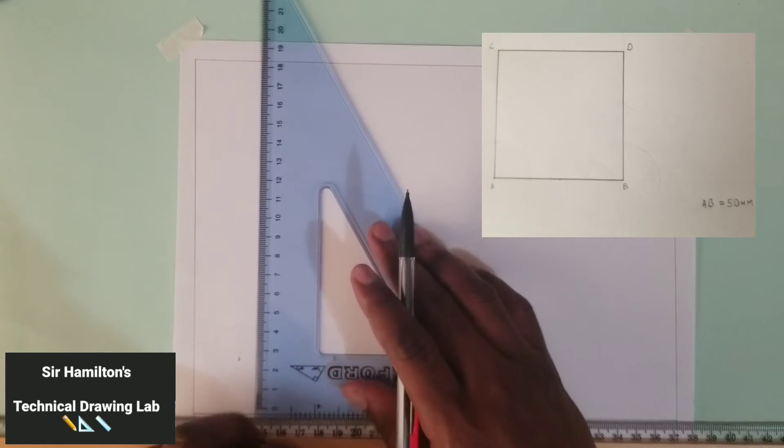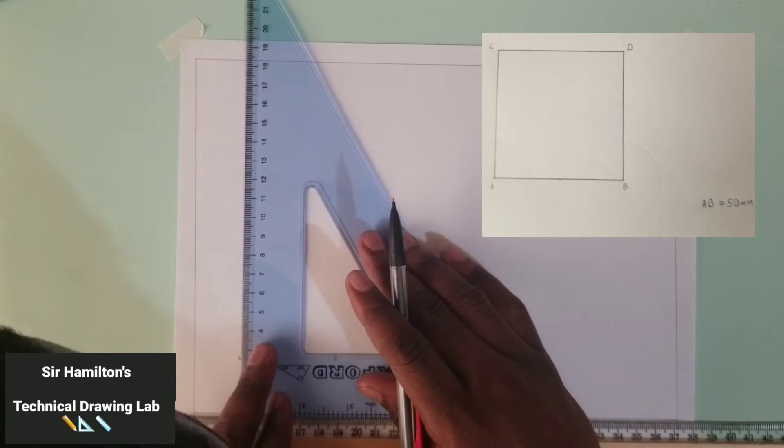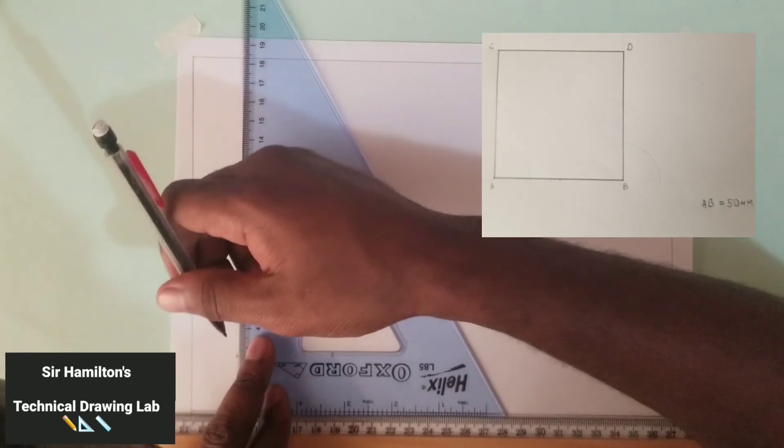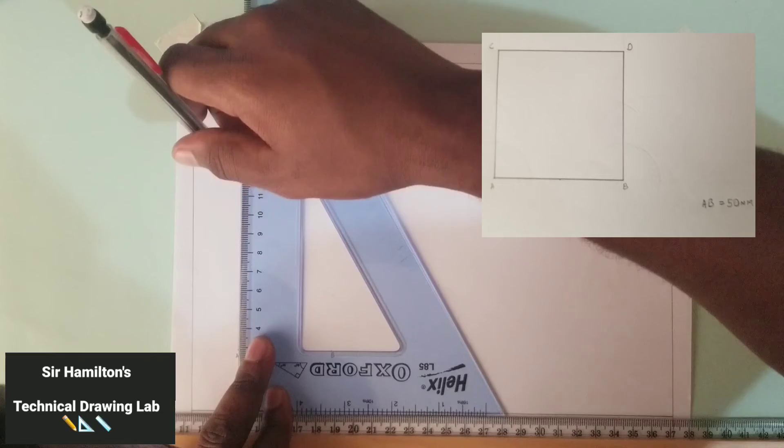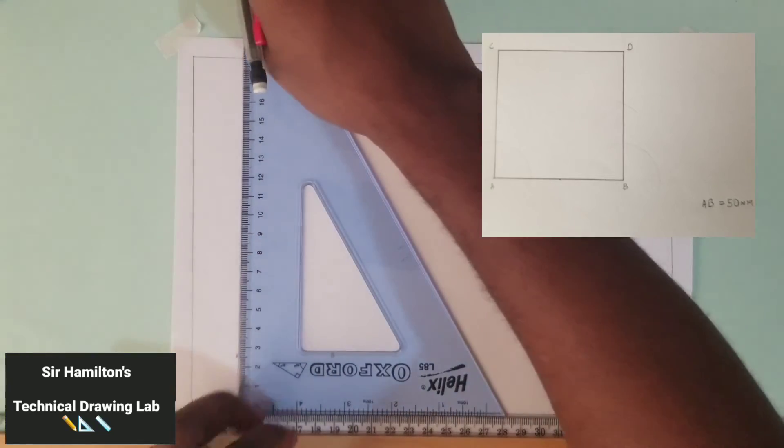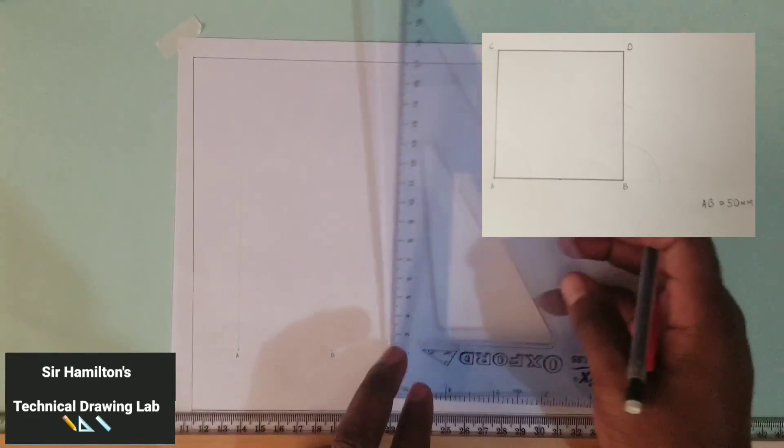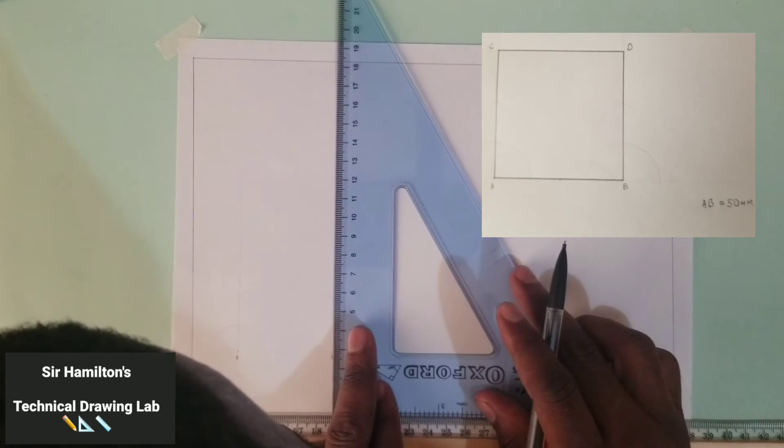And set it at my T-square, and I'm going to draw a line going directly through that arc that I scribed, and I'll do the same at this point.